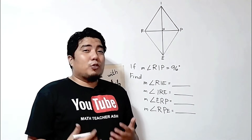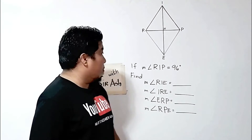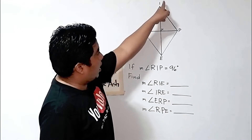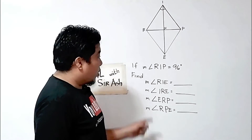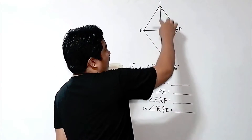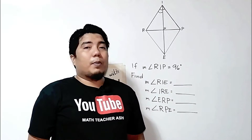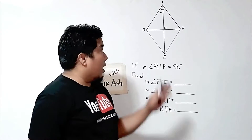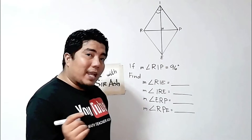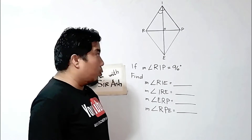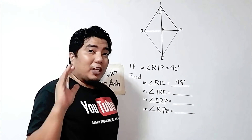In order to answer these problems, you always need to be reminded of the properties of a rhombus. Angle RIP is 96 degrees. For angle RIE, remember that one of the properties of a rhombus is that each diagonal divides the opposite angles of a rhombus. Therefore, if this whole angle is 96 degrees, it will be divided by 2, and the answer is 48 degrees.